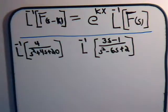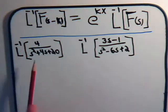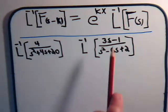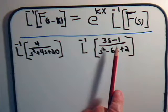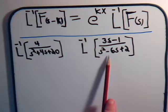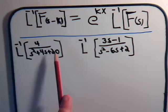We've been practicing using this relationship to solve different forms of inverse Laplace transforms. Let's get some more practice with it — we have two more examples left. Here we have the inverse Laplace transform of 4 divided by the quadratic term s squared plus 4s plus 20. And then for this problem we have 3s minus 1 divided by the quadratic term s squared minus 6s plus 2. So let's start with this one first.